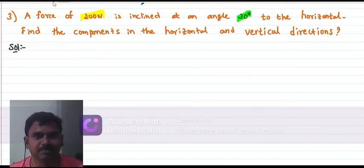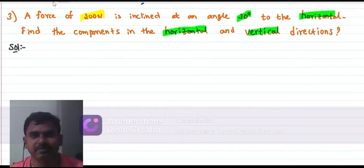If it is inclined at an angle of 30 degrees to the horizontal, we need to find the components in horizontal and vertical directions.